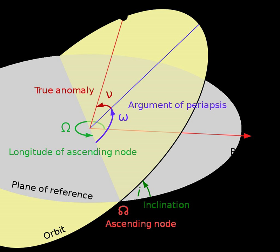Orbital inclination measures the tilt of an object's orbit around a celestial body. It is expressed as the angle between a reference plane and the orbital plane or axis of direction of the orbiting object.